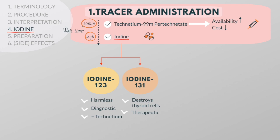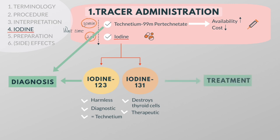To summarize, iodine-123 and technetium are two radioactive tracers used for diagnostic purposes. Iodine-131, on the other hand, is a radioactive drug. It destroys thyroid tissue and is therefore often used for the treatment of thyroid cancer or Graves' disease.